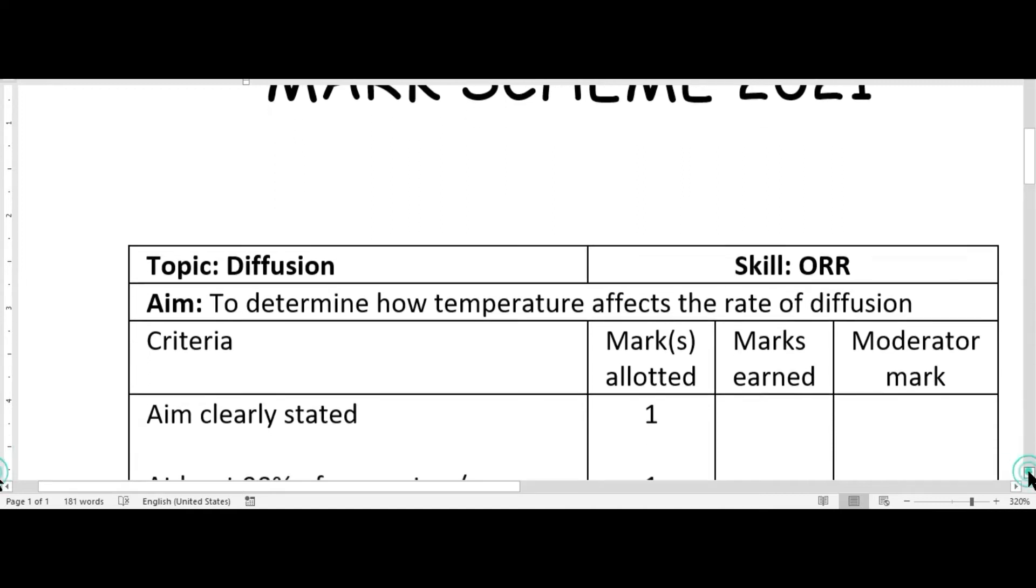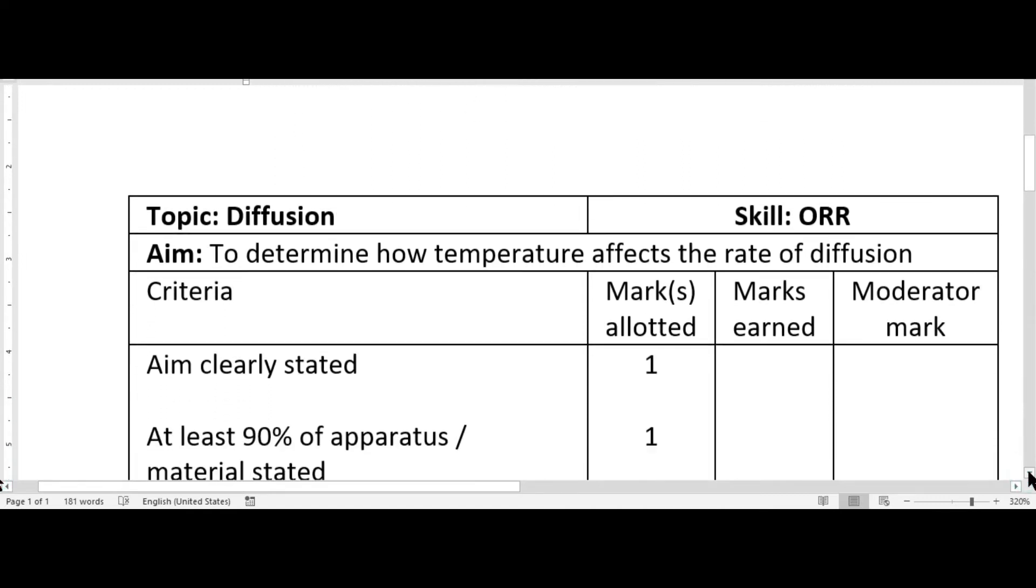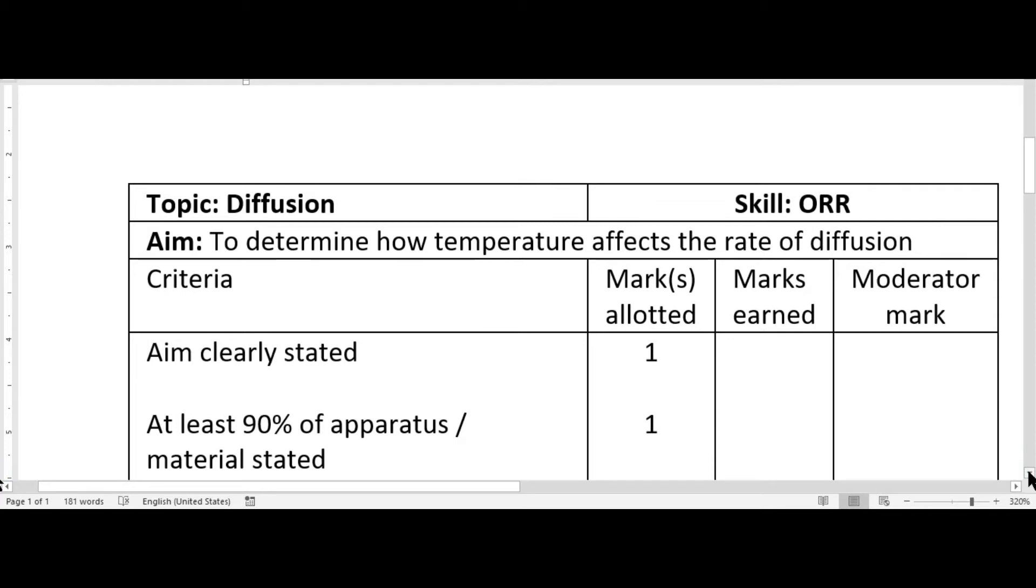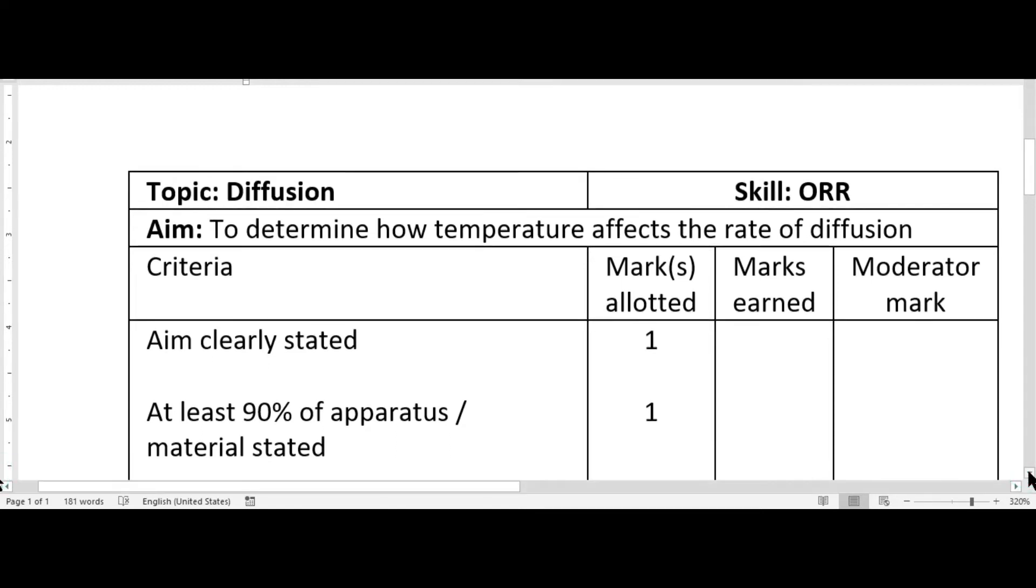So we start off with the aim. The aim must be clearly stated as you are seeing there above we have the aim clearly stated and this must be recorded in your lab book. You'll be allotted one mark if that is properly done.